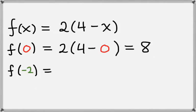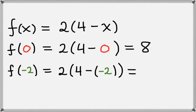What about f of negative 2? Well this time we'll plug negative 2 into our function. Now be careful here — since we have minus a negative, it's a good idea to put the negative 2 in parentheses so we can keep track of those negatives. So here we have 2 times 4 minus negative 2, which is 6. And so 2 times 6 equals 12. So f of negative 2 equals 12.